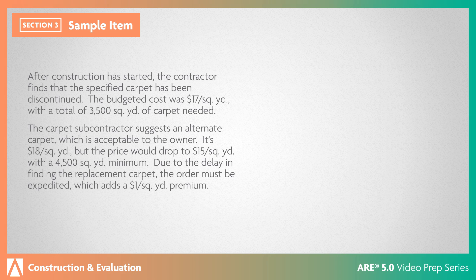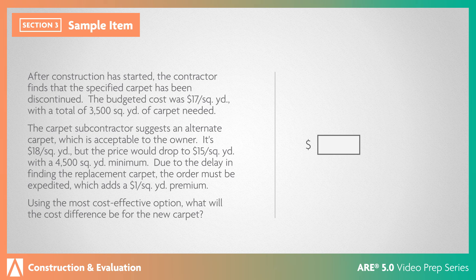The carpet subcontractor suggests an alternate carpet, which is acceptable to the owner. It's $18 per square yard, but the price would drop to $15 per square yard with a 4,500 square yard minimum. Due to the delay in finding the replacement carpet, the order must be expedited, which adds a $1 per square yard premium. Using the most cost-effective option, what will the cost difference be for the new carpet?